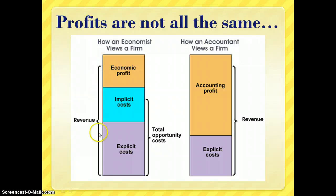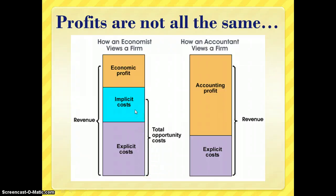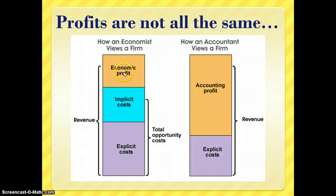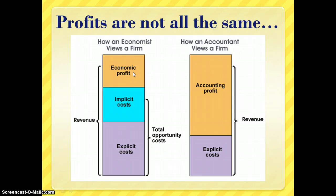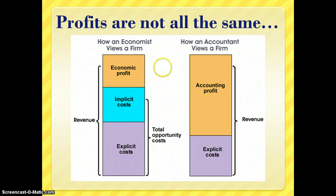With economic profit, we look at total revenue just like accounting profit, but then we account for both explicit and implicit costs to get the full picture of the opportunity cost of a decision. When we add implicit and explicit costs, we end up with a smaller profit. In some cases we might have a positive accounting profit but a negative economic profit, because we could have used our resources more effectively.